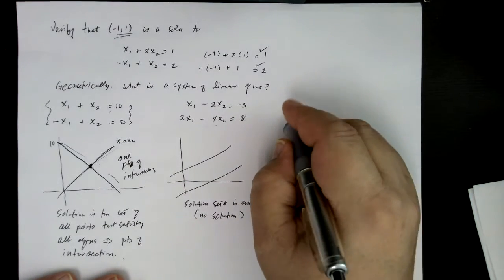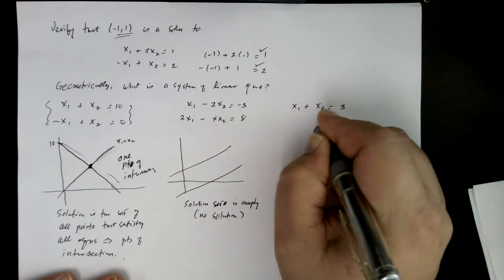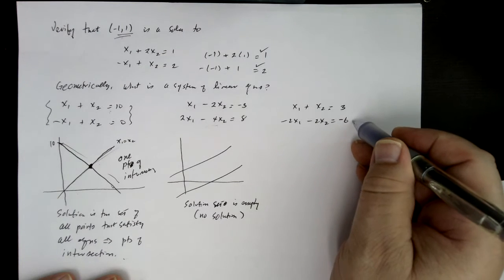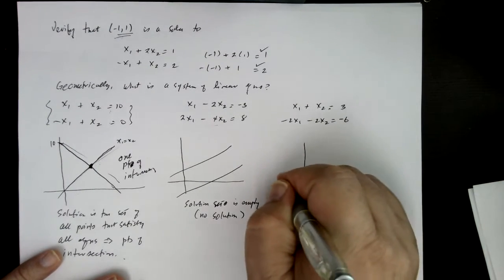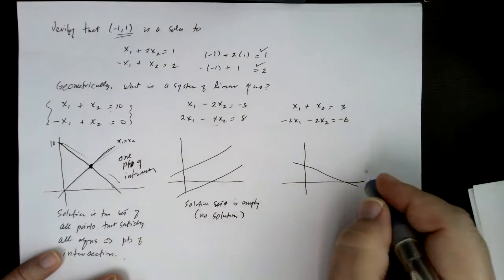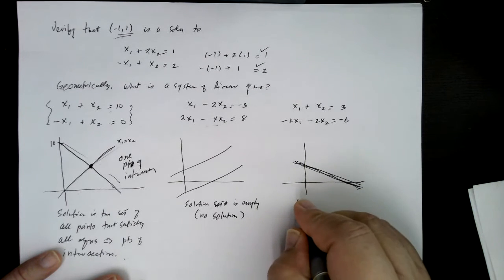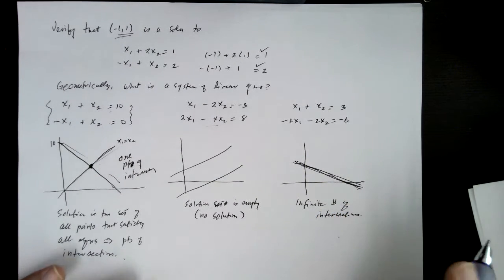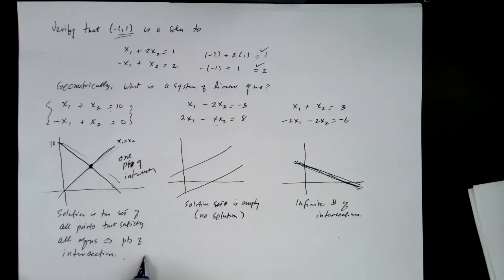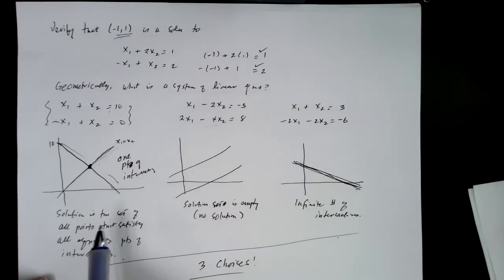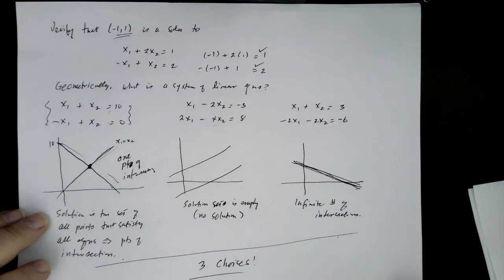And then finally, you might have something like x1 plus x2 equals 3, and then maybe minus 2x1 minus 2x2 equals minus 6. And you might notice that I just multiplied the top by negative 2 to get the bottom. And so in that case, that's going to be 3 minus 1 slope. And so these are actually the same line. So in this case, you get an infinite number of intersections or an infinite number of solutions. Is there any other way to get a point of intersection between two lines? Nope, this is it. So therefore, we only have three choices. Either 1, 0, or infinity. And in fact, that is what happens in the general case.